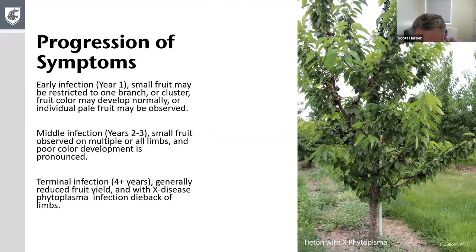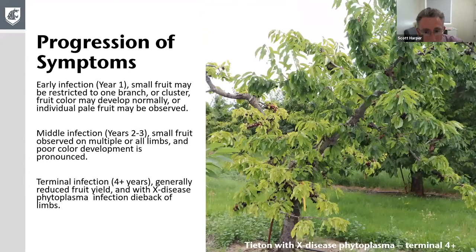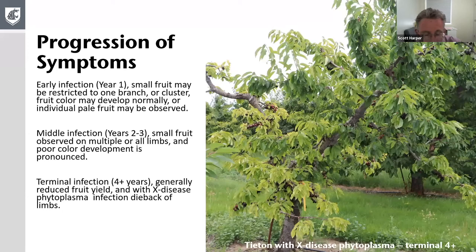Here are examples of relatively early infection in Titan — just a few clusters on different parts of the limbs. And in a later stage infection, you can see the yield is starting to drop and some of the limbs are starting to look a bit bare.